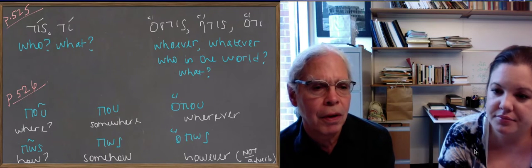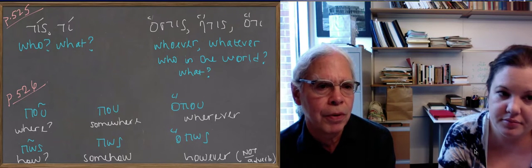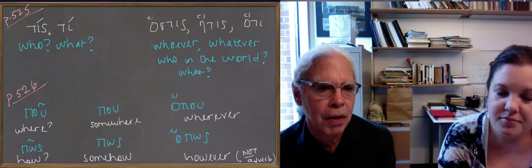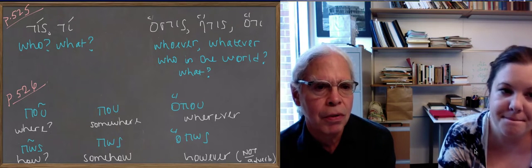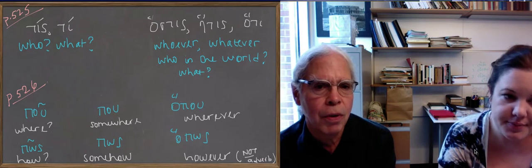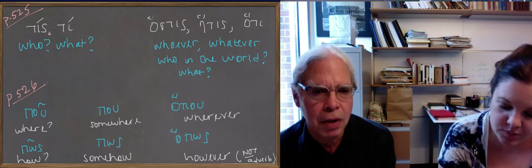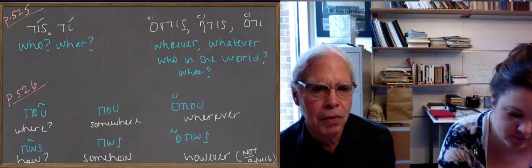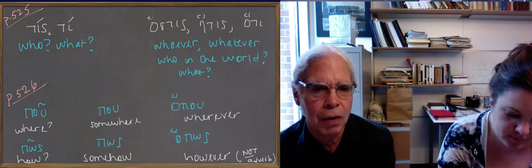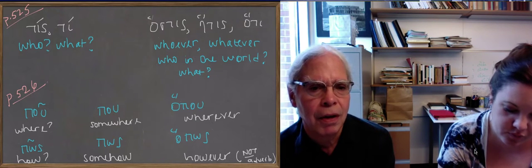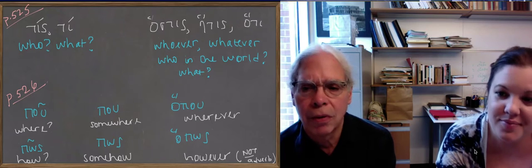So there, up on the Malisi's blackboard, is the direct interrogative. Tis, ti, who or what. And then whoever or whatever is what hostis mostly means. Hostis says it's hati. But as an indirect interrogative, it means who in the world, with a question mark after it. What in the world?